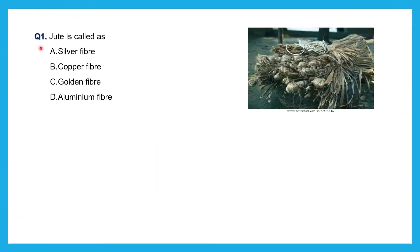First question: Jute is called a silver fiber, copper fiber, golden fiber, or aluminium fiber? This is a very direct question. Jute is called the golden fiber because of its color, appearance, and high cash value.